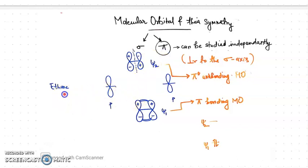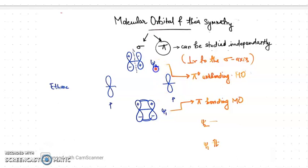For ethene, as described in the previous video, the two p orbitals on each carbon atom overlap to give you the pi bond. Since two atomic orbitals are combining, it gives rise to two molecular orbitals: chi1 and chi2. Chi1 is the bonding molecular orbital and chi2 is the anti-bonding molecular orbital. Since there is a phase change happening, we have a presence of a node here. This is the molecular orbital for ethene.